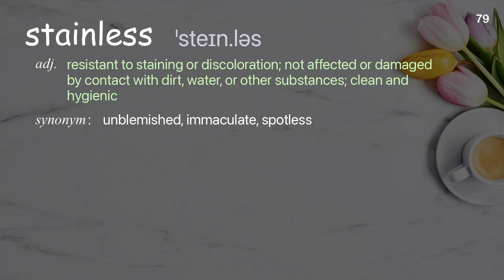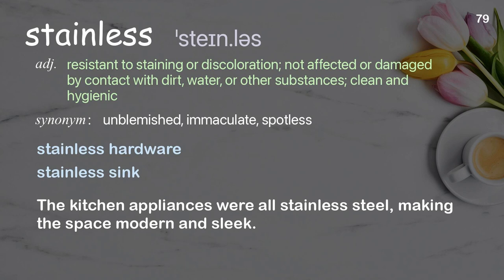Stainless: resistant to staining or discoloration; not affected or damaged by contact with dirt, water, or other substances; clean and hygienic. Examples: stainless hardware, stainless sink. The kitchen appliances were all stainless steel, making the space modern and sleek.